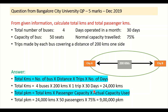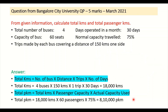So total kilometers comes to 24,000 kilometers. Total passenger kilometers: 24,000 km × 50 passengers × 75% actual capacity = 9 lakh passenger kilometers.